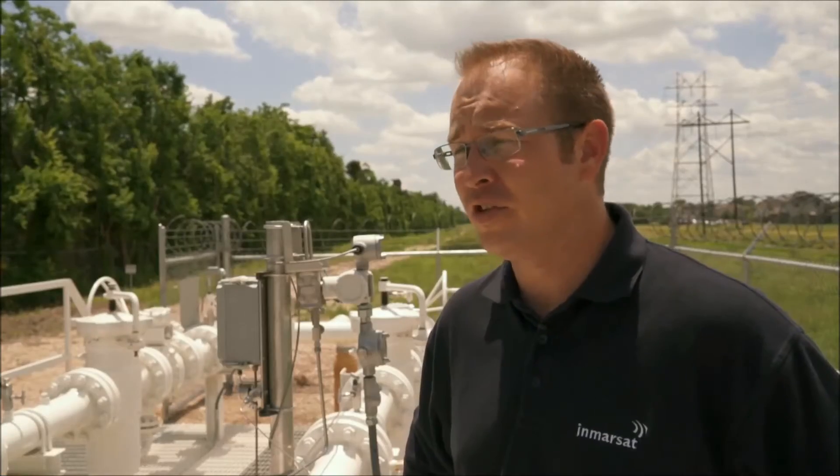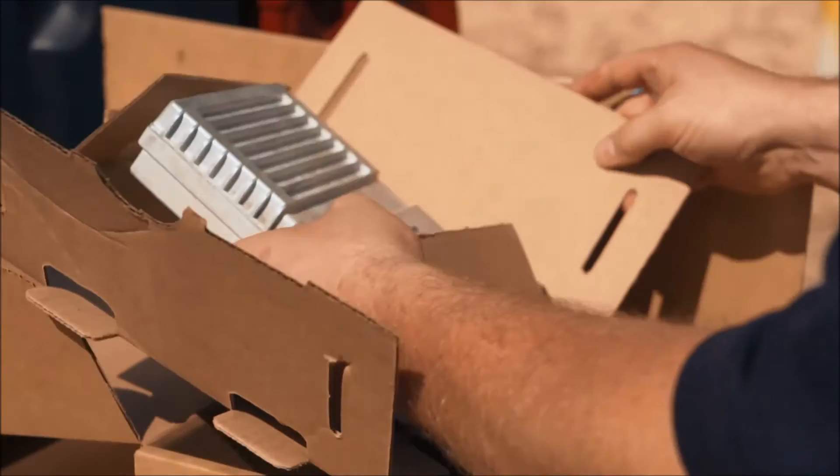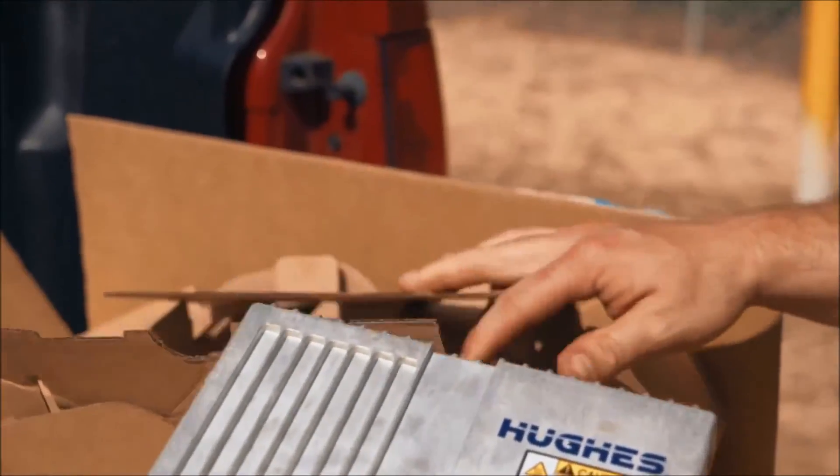Other satellite solutions can be quite complicated to set up, but with the Hughes 9502 terminal, when you open up the box, you'll just find three components: a modem, 10 meters of cable with connectors, and an antenna.